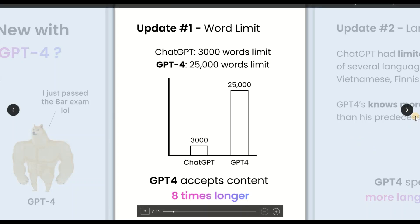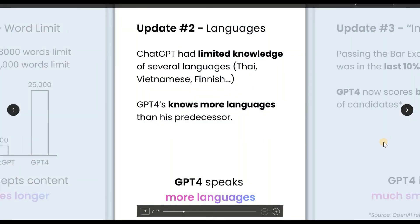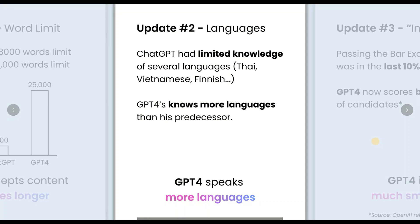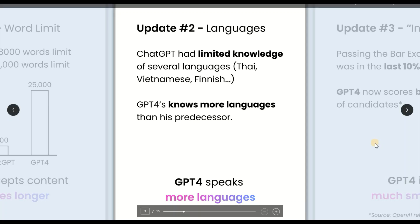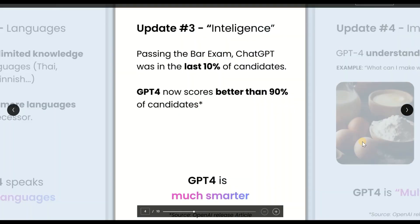The next feature is language coverage. ChatGPT-3 used to have a limited set of languages — for example, Thai, Vietnamese, and Finnish were limited. Now ChatGPT-4 comes with much broader language coverage.